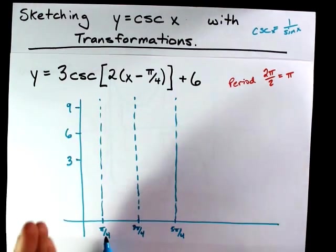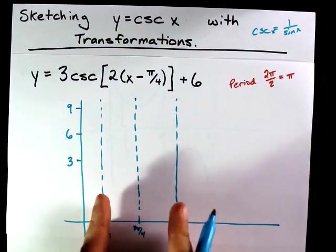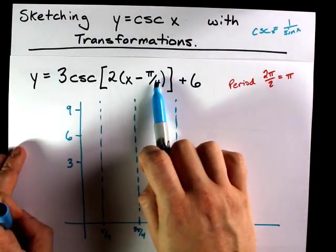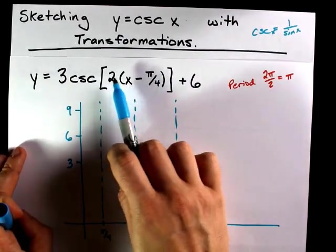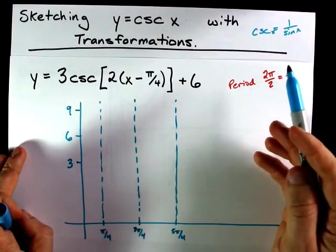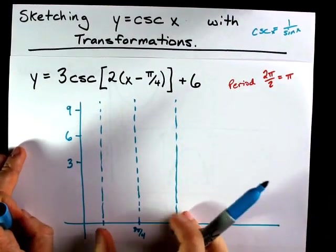This pi over 4 and its endpoint at 5 pi over 4 helps us account for the phase shift of right pi over 4 and the horizontal compression, which changes the period to a single pi instead of 2 pi.